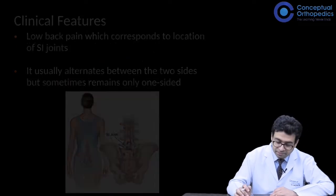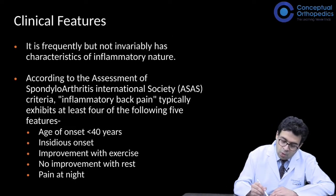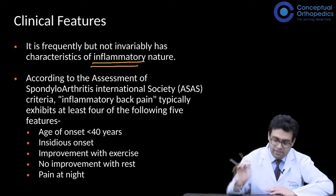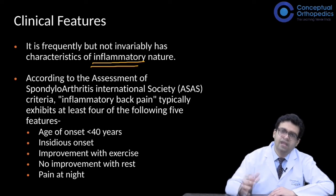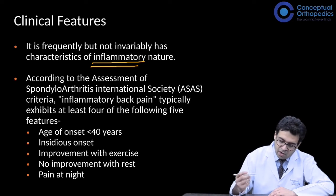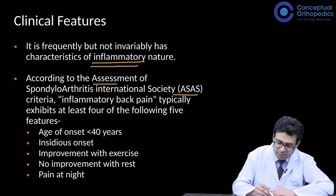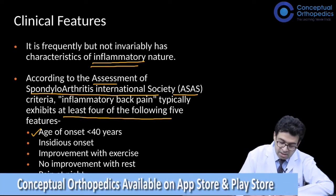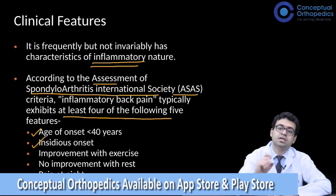There is usually a history of alternating pain between the two sides, although sometimes it may remain one-sided as well. Regarding the meaning of 'inflammatory back pain,' there are many criteria and definitions. One of the latest is given by ASAS, which stands for the Assessment of SpondyloArthritis international Society. They say at least four of the five criteria should be present.